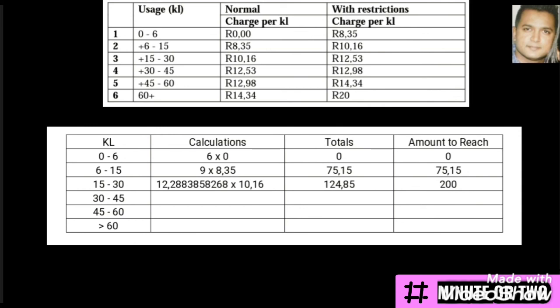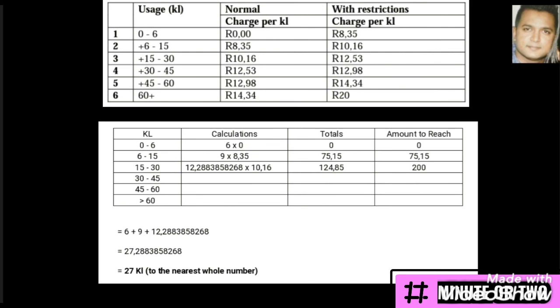The long decimal in the calculations column represents the amount of kilolitres of water used in that interval, because in the calculations column all amounts are multiplied by the rate, and those multipliers are the kilolitres used at each interval. Our question asked us to calculate the amount of water used for R200. So I add up all the kilolitres used — 6, 9, and the long decimal — leaving it as a long decimal for now. Finally, as the question asked us to round off to the nearest whole number, we round our total at the end.